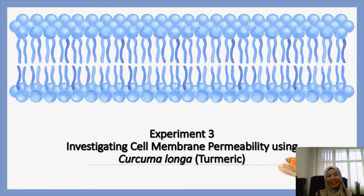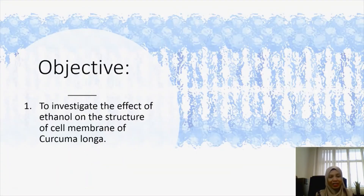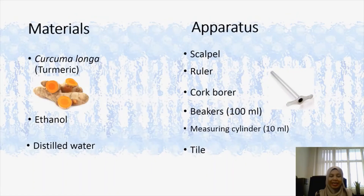Assalamualaikum and a very good day everyone. Today I'm going to give you a briefing on Experiment 3: Investigating Cell Membrane Permeability using Curcuma longa, also known as turmeric. The objective is to investigate the effect of ethanol on the structure of the cell membrane of Curcuma longa. These are the materials and apparatus needed.